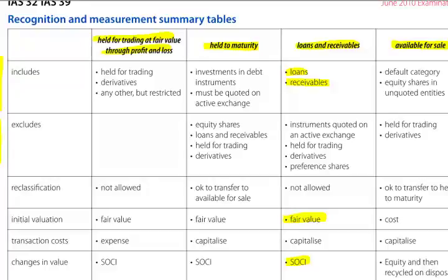Exclusions: held to maturity excludes equity shares and loans and receivables. Equity shares are in available for sale. Loans and receivables are in available for sale. Held for trading is in held for trading at fair value through profit and loss. Derivatives are also in held for trading at fair value through profit and loss.